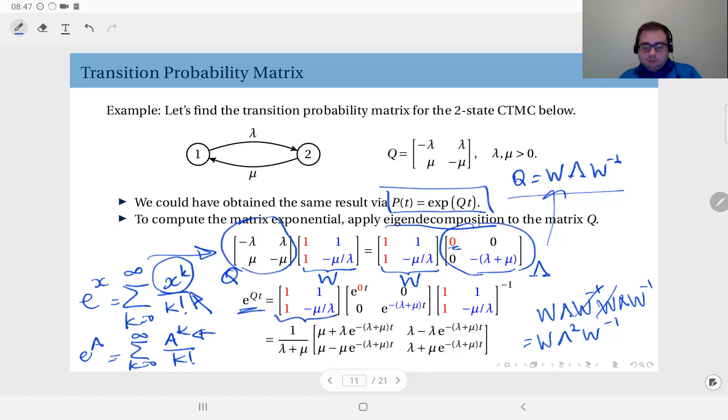this matrix w times e to the power lambda times t times the inverse of w.